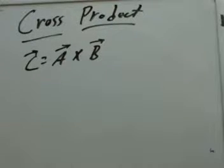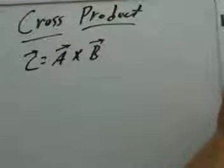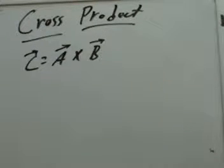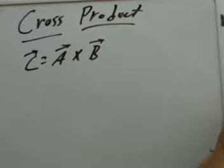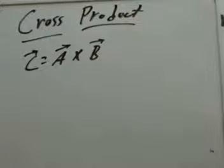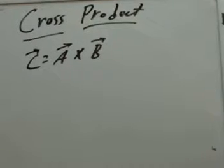The cross product between two vectors, say like A and B, comes up a lot when you're studying about magnetism. So in this video, we'll just give a little rundown of the cross product. Much of the stuff you may remember from your calculus class or be a little rusty on, but let's just give a rundown of some of the salient features of the cross product.